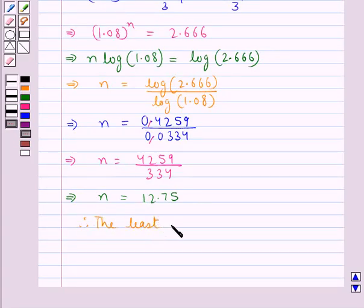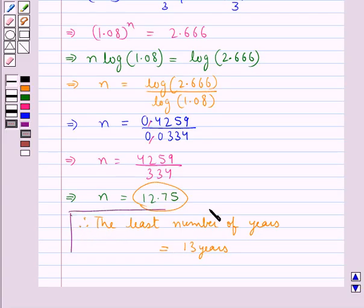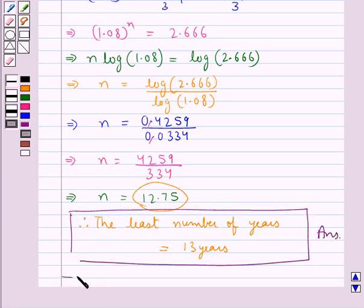Hence the least number of years is equal to 13 years. That is 12.75 is rounded off to 13. And so this is our final answer. This concludes the session.